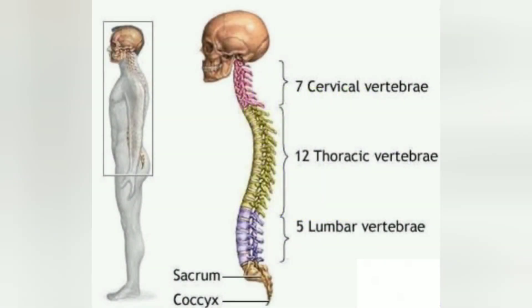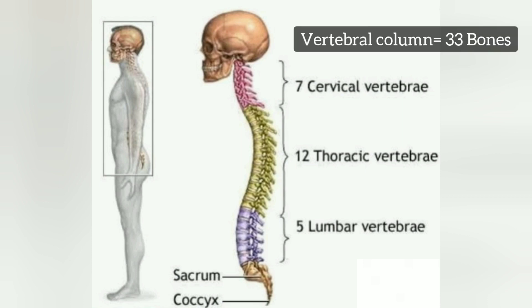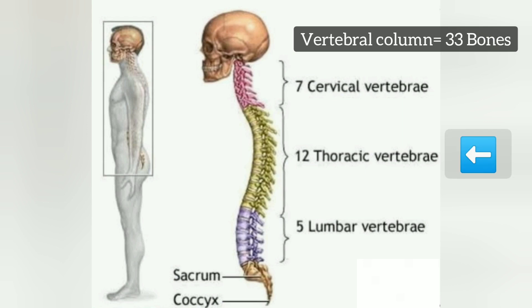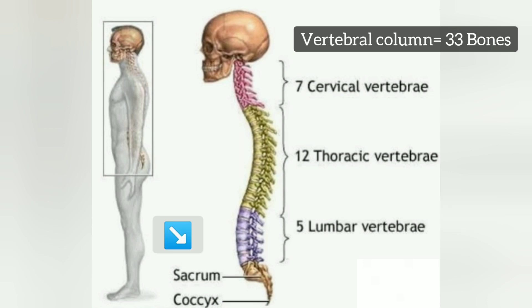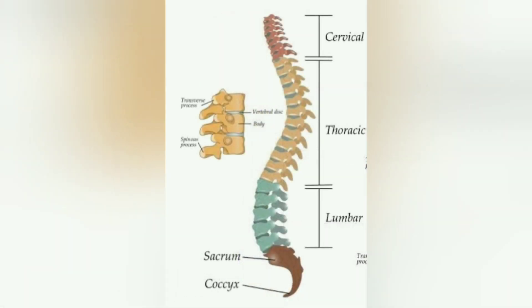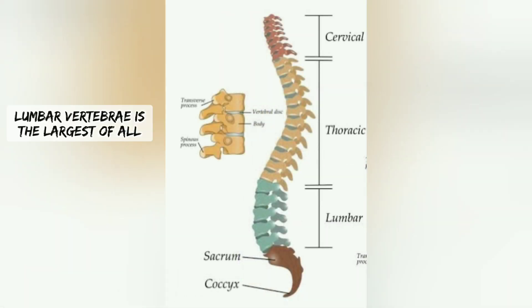Vertebral column: the vertebral column has a total of 33 bones and 5 divisions. Cervical vertebrae: 7 bones. Thoracic vertebrae: 12 bones. Lumbar vertebrae in the abdomen region. Sacrum: 5 bones. Coccyx: 4 bones.